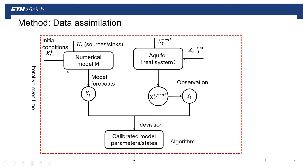We have this numerical model, and for the model we need initial conditions and also input forces to drive the numerical model to run. From the model we get the model forecast. At the same time, we also collect data from the real aquifer systems. There is a deviation between the model forecast and the observations, and based on this we will calibrate the numerical model. This calibration process is different from what was introduced last week — this is a new way using the data assimilation algorithm to calibrate model parameters and state.